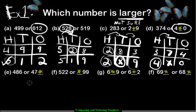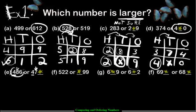Now for these ones I'm not going to make an HTO chart. I'm going to show you another way of doing it without it. All you have to do is start by underlining the digits. So you have four hundreds here and four hundreds here — it's a tie. So what do we do? We check the tens. We have eight tens over here and seven tens over here. We have a winner — eight is bigger than seven, it wins.